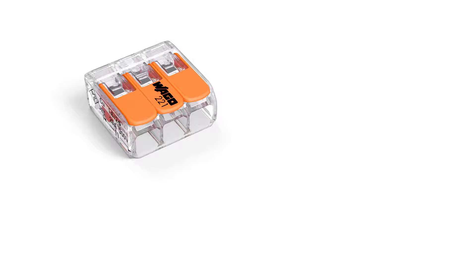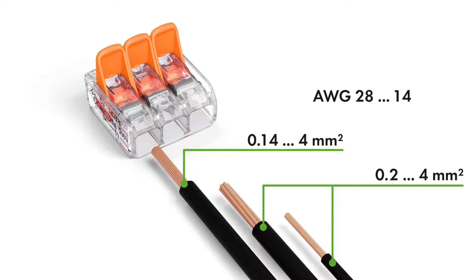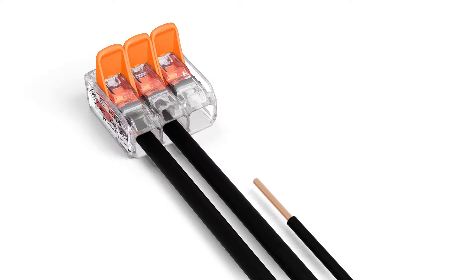The compact splicing connectors for all conductor types feature a large connection range, 0.14 to 4 square millimeters fine-stranded and 0.2 to 4 square millimeters solid and stranded, 28 to 14 AWG. This flexibility permits a wide range of applications, especially when conductors of different types and different sizes are used together.